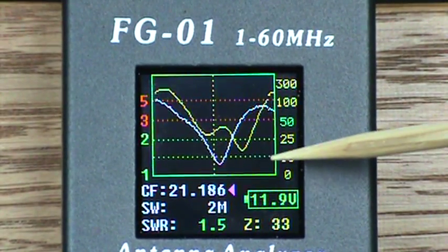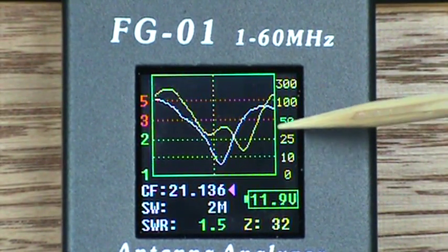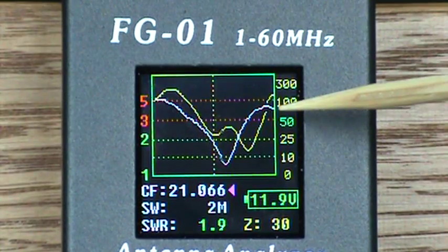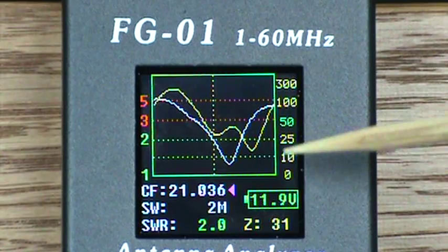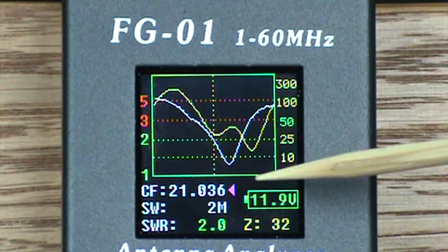I'm going to slide it back and as I come through the center frequency, 1.2 and 1.3 to 1, I'm going up a little higher. And my 2 to 1 SWR point at the low end of the band is going to be approximately 21.036.